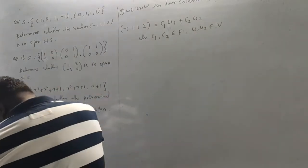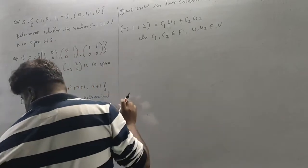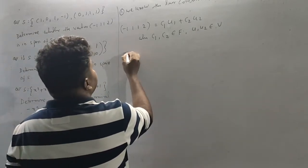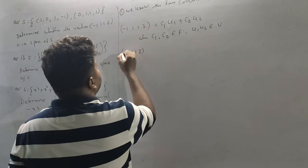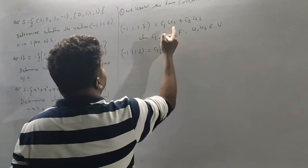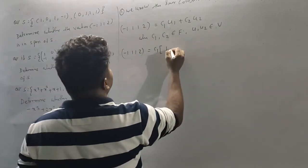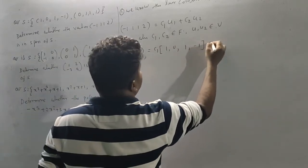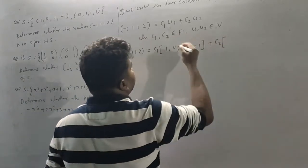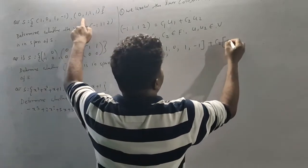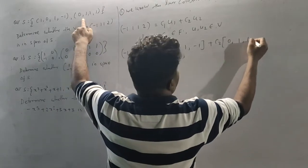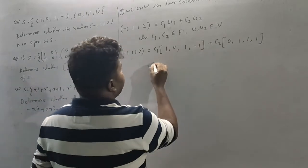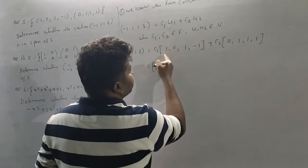Expanding: (-1, 1, 1, 2) = C1·(1, 0, 1, -1) + C2·(0, 1, 1, 1). We now group the components to compare both sides.